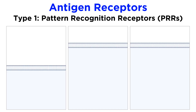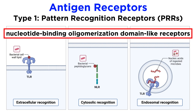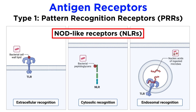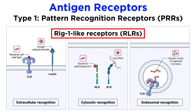Pattern recognition receptors, or PRRs, include toll-like receptors (TLRs), nucleotide binding oligomerization domain-like receptors, also called NOD-like receptors or NLRs, C-type lectin receptors or CLRs, and RIG1-like receptors or RLRs.